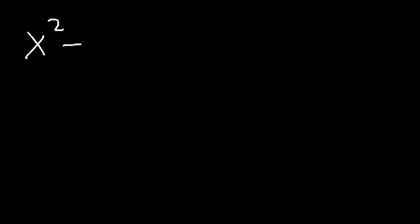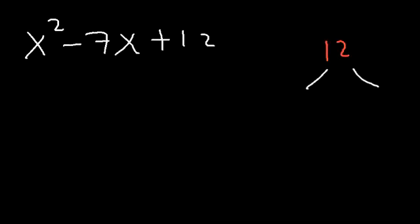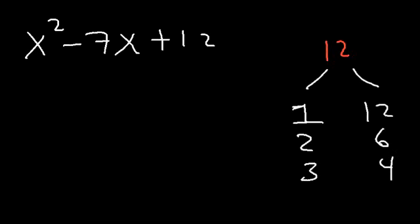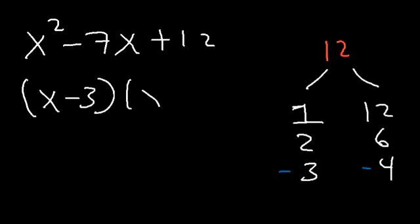Let's try x squared minus 7x plus 12. What two numbers multiply to 12 but add to negative 7? Let's make a list: 12 divided by 1 is 12, divided by 2 is 6, divided by 3 is 4. Now 3 plus 4 adds to positive 7, but negative 3 and negative 4 add to negative 7, and negative 3 times negative 4 is positive 12. So the answer is x minus 3 times x minus 4.